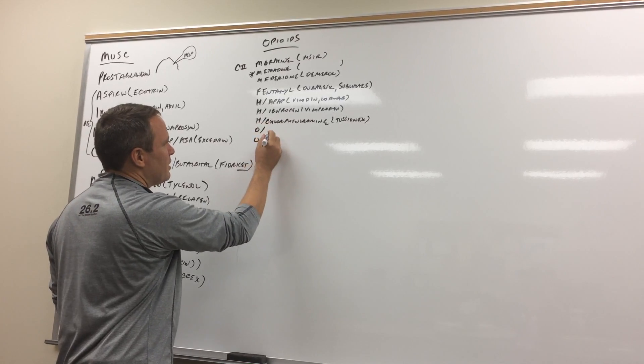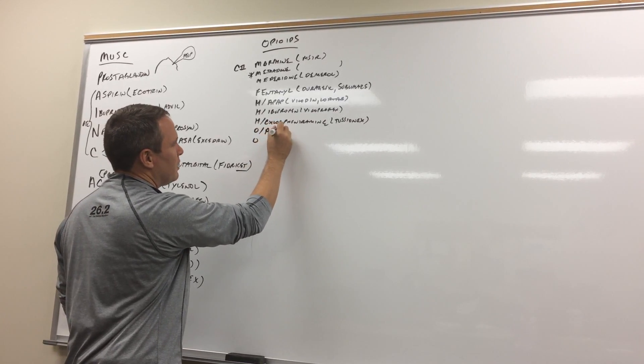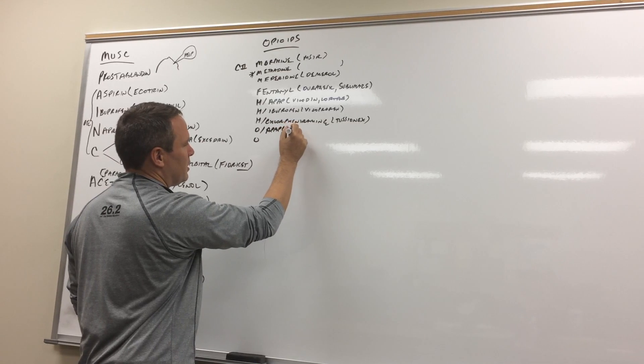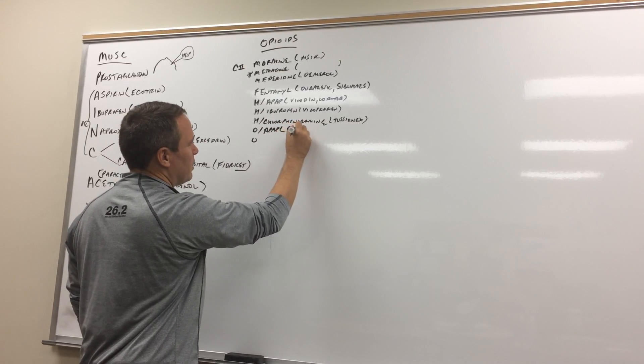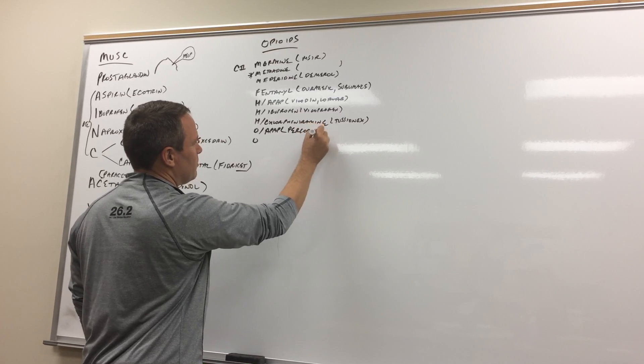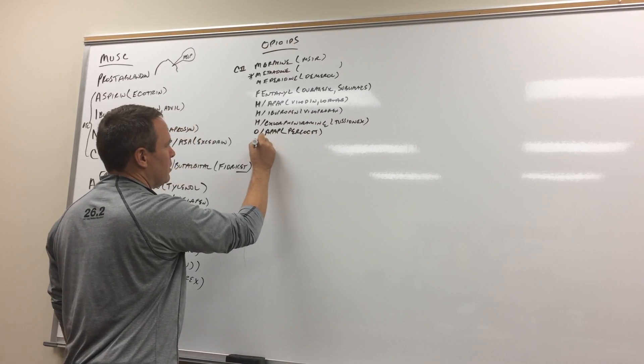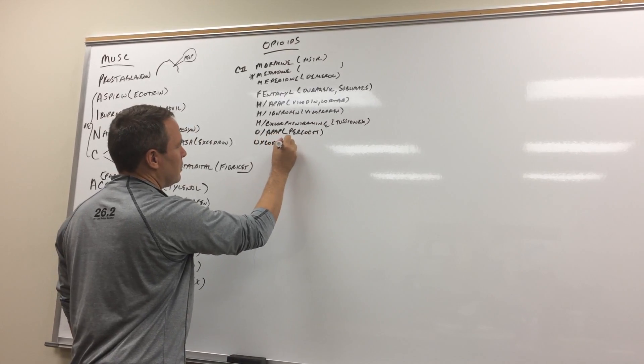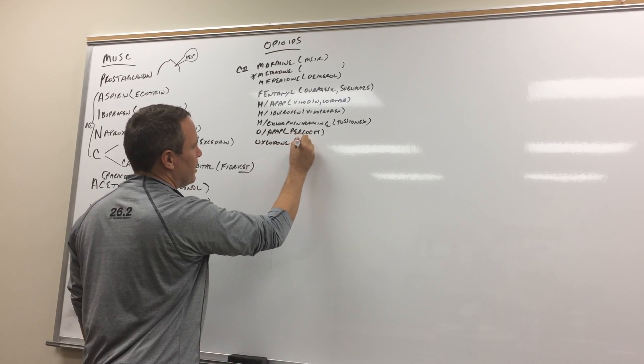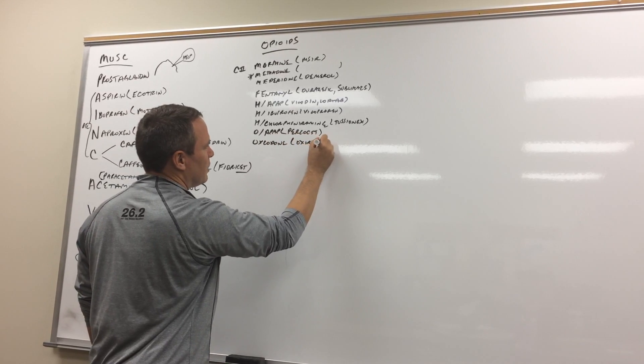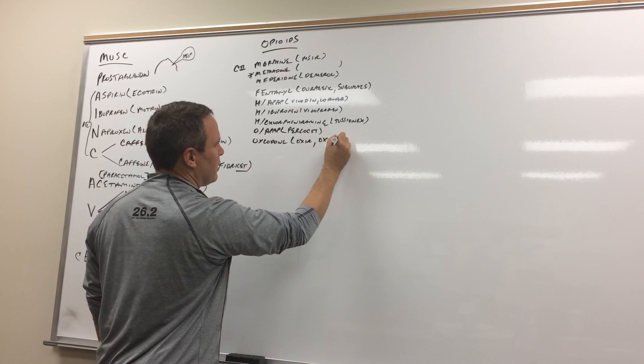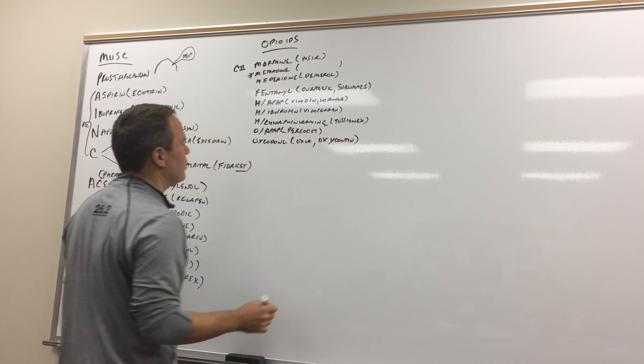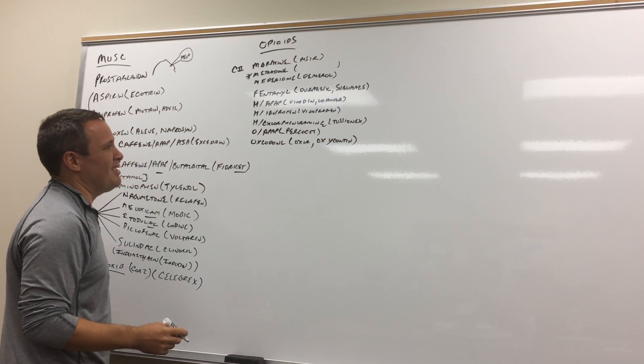Then you've got oxycodone with the acetaminophen which is something like Percocet and there's a bunch of other names. And then you've got the oxycodone alone and that could be something like OxyIR or OxyContin if it's long acting. Something like that. And that's just the C2s.